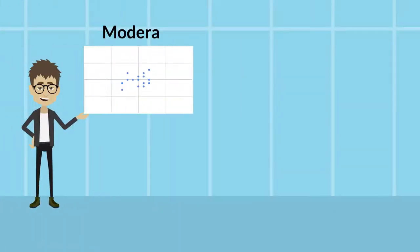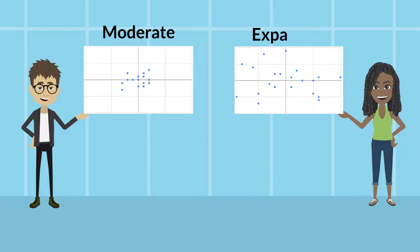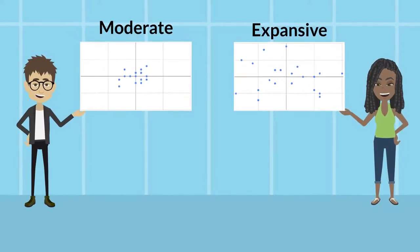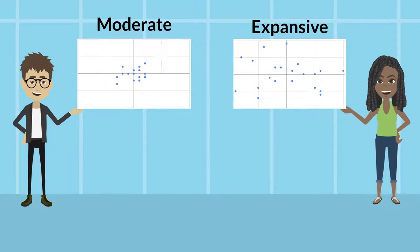This person is moderate, while this one is expansive. What it all comes down to is that we're all more than a lonely point on a graph. We contain a whole set of views.